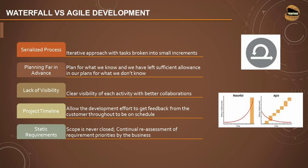In traditional models there was a lack of visibility, but in Agile there is clear visibility of each activity with better collaboration and transparency — putting activities in a common portal so everyone can see how things are progressing and where action is needed. Agile allows development to get feedback from the customer throughout to stay on schedule. Scope is never closed in Agile: there is continual reassessment of requirements and priorities by the business, accepting changes even late in the lifecycle to meet customer expectations.